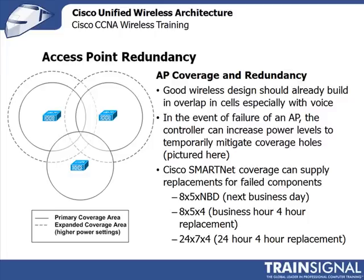Something that might not seem obvious — and not something you would expect on a certification exam — is understanding how to handle an access point failure. Cisco SmartNet is essentially Cisco's extended warranty on components, and there are typically two approaches that customers take. The first is they buy SmartNet. There are several different levels of SmartNet related to hardware. For access points it's very simple — there are three levels. The first is 8x5xNext Business Day, meaning if there's a failure during business hours, you'll get a replacement the next business day.